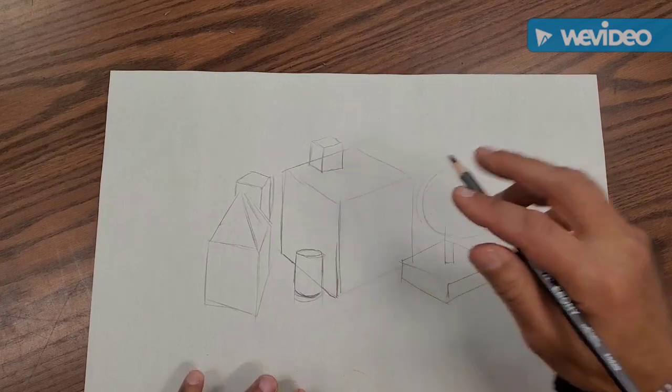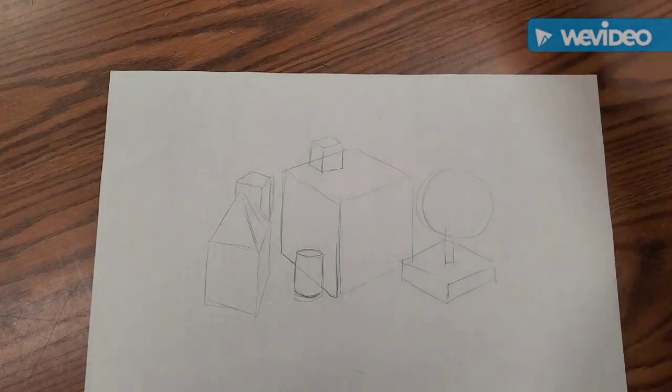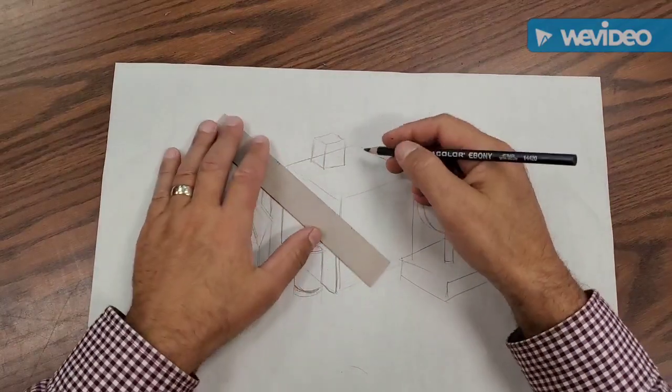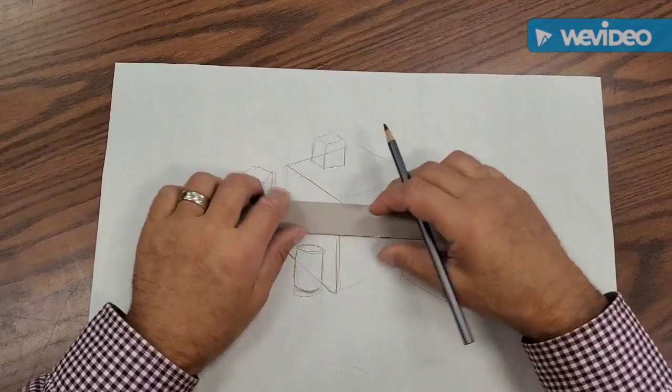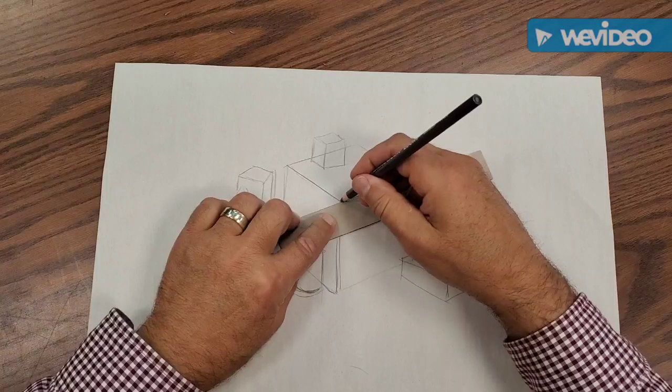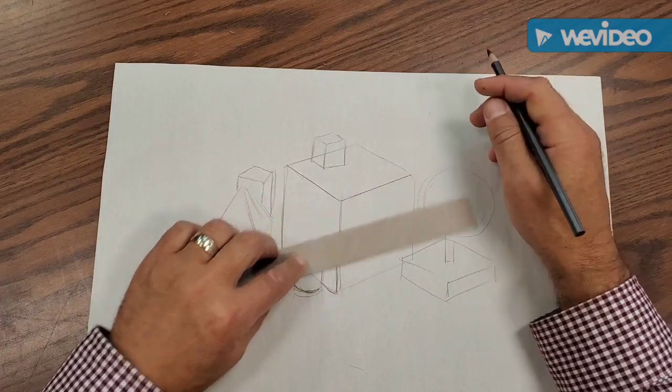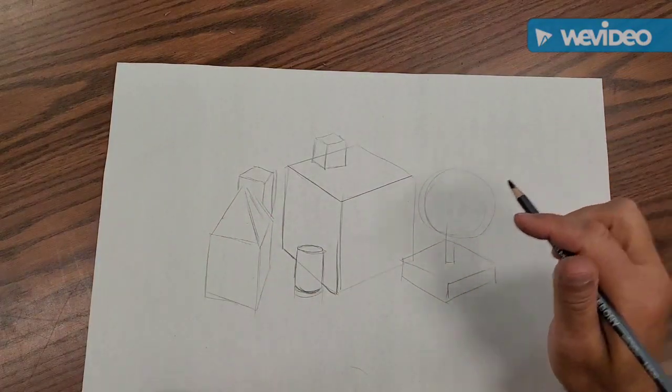When you clean them up, you can use a little paper ruler like this one to sort of clean up your lines and make sure they're good. Then we're going to be transferring this onto a good sheet of paper, and I'll show you how to do that in another demonstration.